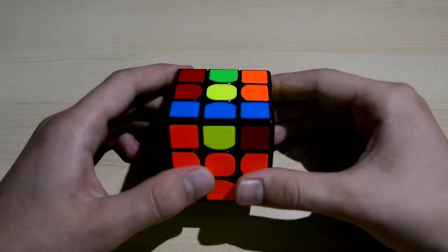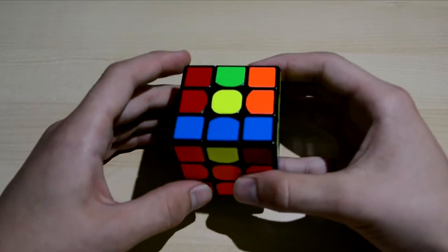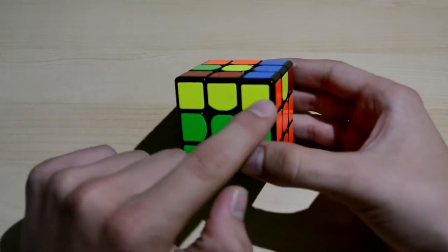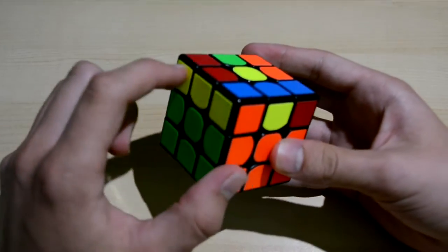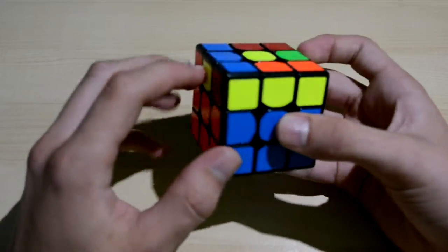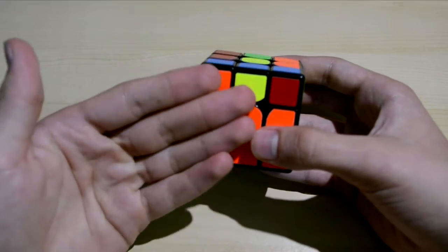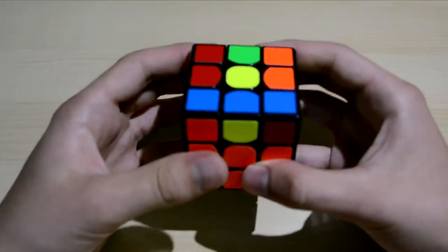The first OLL is probably one of the easiest dot cases to recognize. You have two 3x1 lines on each side, and then an edge facing you, and an edge facing backwards.